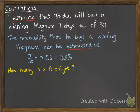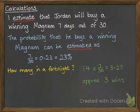You might then get asked a question like: from this probability, how many do you expect he would win in a fortnight? That means that he would do this over 14 days. We need to use that probability to work out, of those 14 days, how many times would he buy a magnum and then get a winning stick. So we multiply by that probability we just worked out, and we'll get 3.27. When you're talking about this applied to the real situation, that's not a sensible thing to say — he wouldn't win 3.27 winning sticks. So we need to round that to a sensible answer. We estimate that he would get approximately 3 winning sticks over a fortnight.